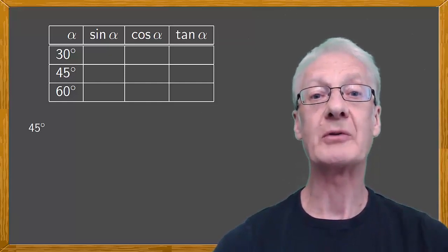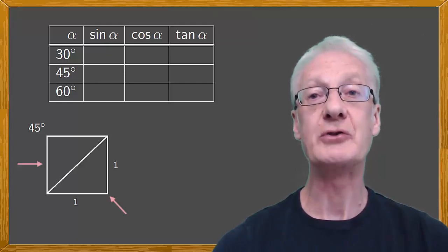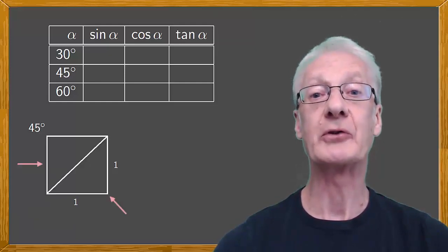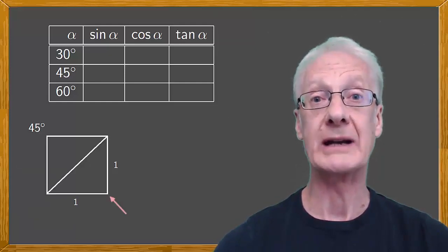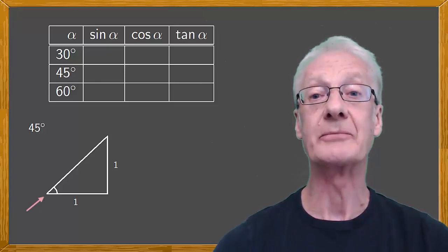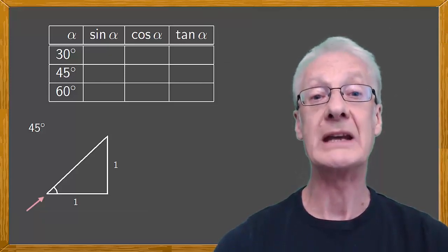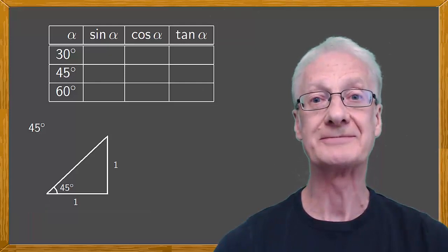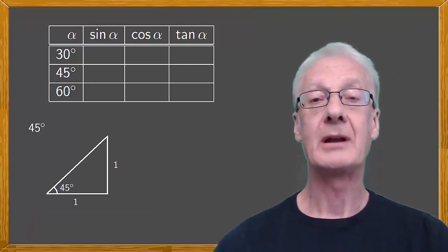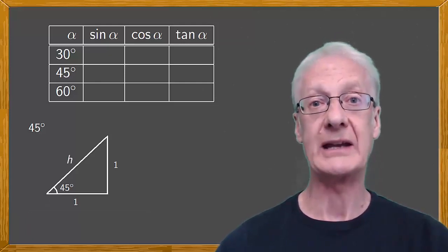To do this we'll start with a square of side 1. Now we'll draw a diagonal to produce two right triangles. Let's focus on the one on the right. Notice that we got this angle by dividing a 90 degree angle into two equal parts, so each measures 45 degrees. Now we'll calculate the length of the hypotenuse, which we'll call h.